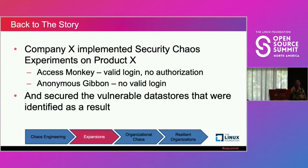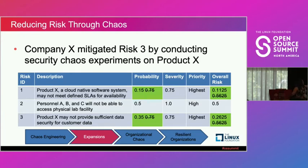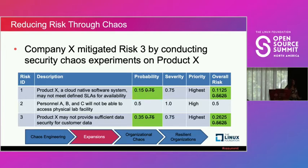In Company X's case, they discovered that one of the databases was not encrypting information at rest — data was being stored in plain text. Thankfully this particular database did not contain any user-identifiable information, so the exposure risk was relatively low. However, it was a legitimate security failure. They went back and implemented encryption at rest on the database. As a result, the probability of failure for risk number three went down to 0.35 — not as low as possible since they only focused on encryption in transit and at rest — but the overall risk dropped significantly to a level the lab manager was comfortable with.